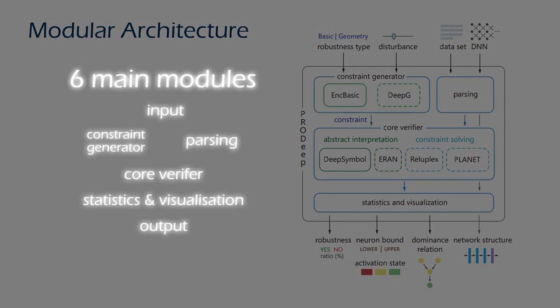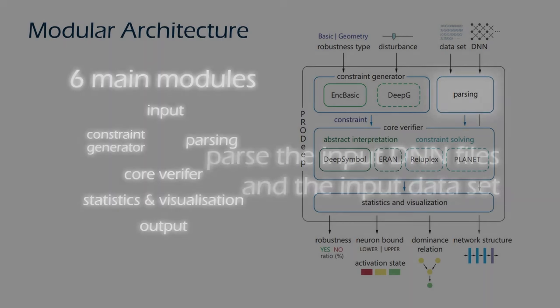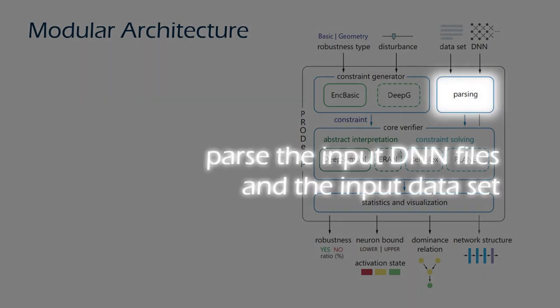PRODeep has six main modules. Tools we integrate in our framework have different network formats and inputs. The parsing module is used to process network files and input data in various formats.